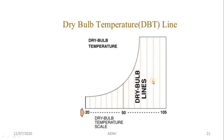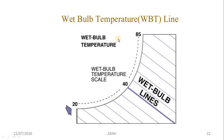The dry bulb temperature lines are vertical lines on the x-axis of the psychrometric chart. The wet bulb temperature lines are curved lines inclined from the saturation line.